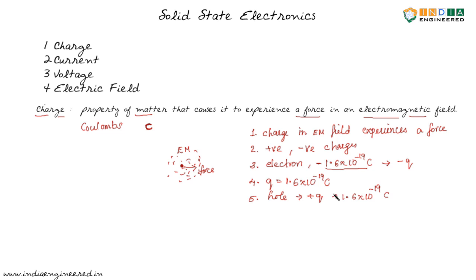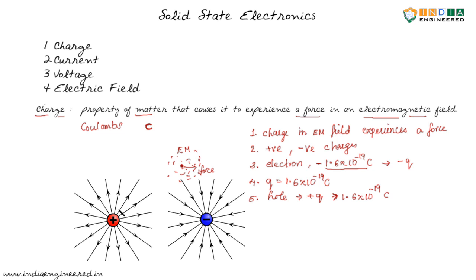The charge of a hole is 1.6 into 10 power minus 19 coulombs. Let's take a look at how electric field lines emerge out of a positive charge and a negative charge. In the case of a positive charge, we assume that electric field lines diverge. In the case of a negative charge, electric field lines converge to it.